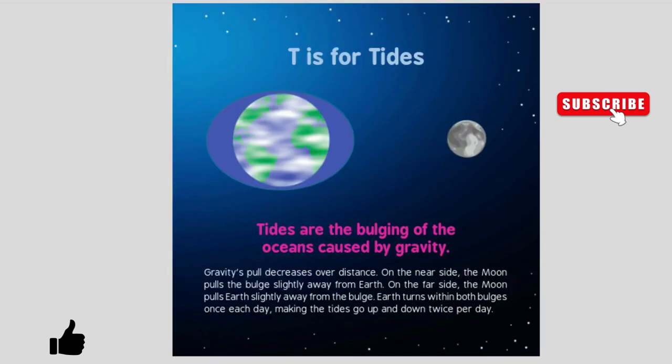T is for Tides. Tides are the bulging of the oceans caused by gravity. Gravity decreases over distance. On the near side, the Moon pulls the bulge slightly away from Earth. On the far side, the Moon pulls Earth slightly away from the bulge. Earth turns within both bulges once each day, making the tides go up and down twice per day.